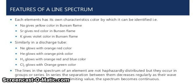The features of a line spectrum: each element has its own characteristic color by which it can be identified. Sodium gives yellow color in a Bunsen flame; strontium gives red color; potassium gives violet color. In a discharge tube, sodium glows with orange and red color, helium glows with orange and pink color, and hydrogen glows with orange, red, and blue color. The lines in the spectrum of an element are not randomly distributed but occur in groups or series, where the separations between them decrease regularly as their wavelength decreases. At a certain limiting value, the spectrum becomes continuous.